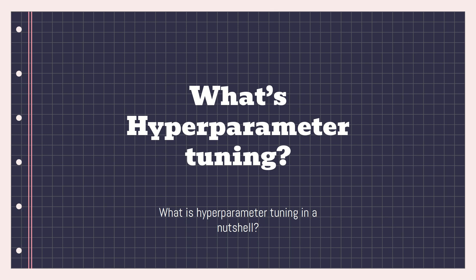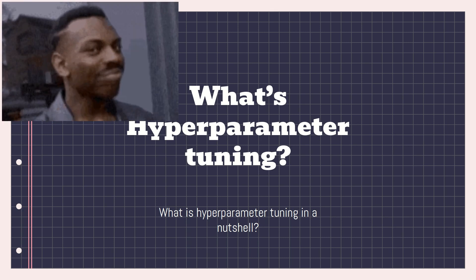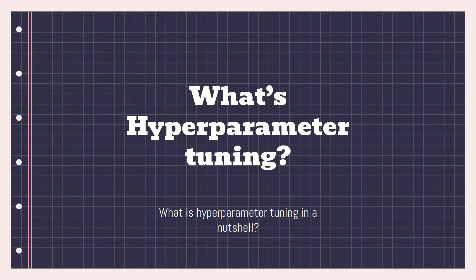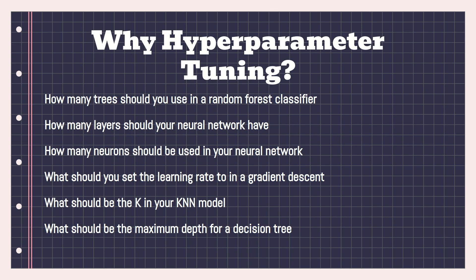We can do this manually by training with different parameters, but that can take a very long time. Another approach is called hyperparameter tuning — we let the computer automatically select the best parameters through a process of trial and error. Parameters used to define a model are called hyperparameters, and the process of selecting the best ones is called hyperparameter tuning.